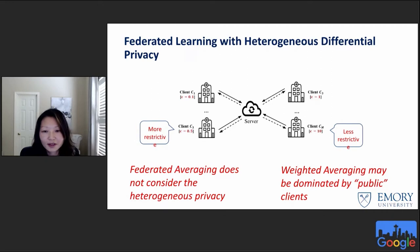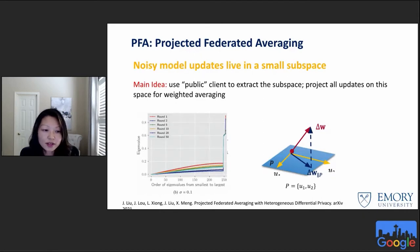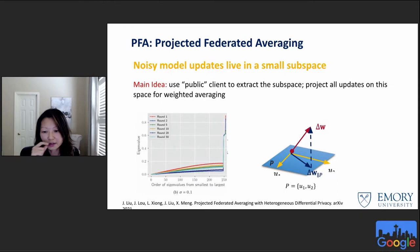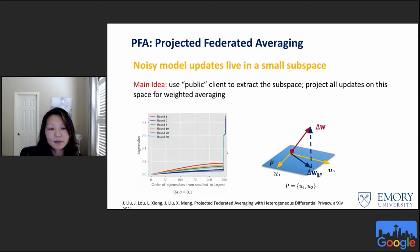The challenge is how to utilize information from the less noisy updates without being dominated by them and biasing the final global model. This motivates our projected federated averaging approach. Inspired by the observation that stochastic gradients stay in a much lower-dimensional subspace along the SGD training trajectory, we confirmed that noisy model updates also live in a very small subspace. The basic idea is to use the public clients with less restrictive privacy budgets to extract the subspace, then project all updates from all clients onto this subspace before averaging them — leveraging information from public clients without biasing others.